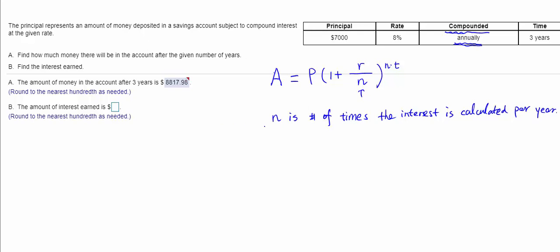How do we know what n is? Take a look. If it says the interest is compounded annually, that means n = 1. The interest is only calculated once a year.